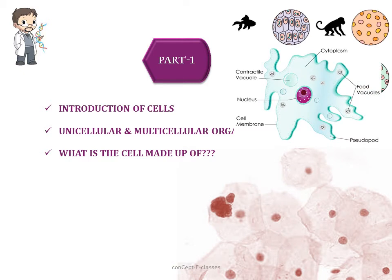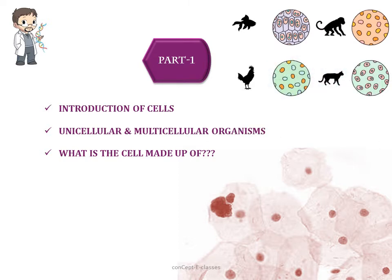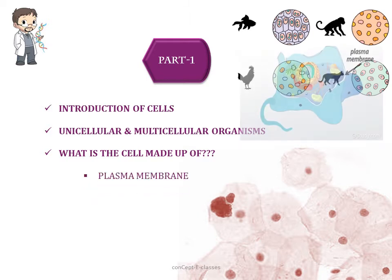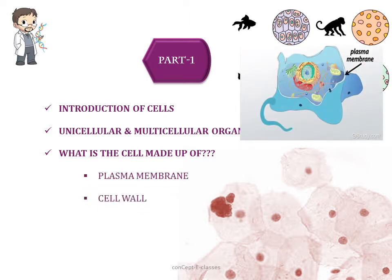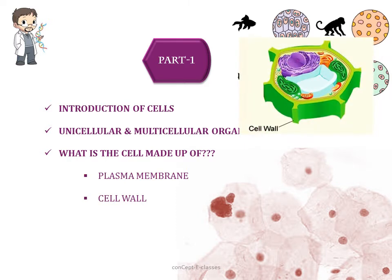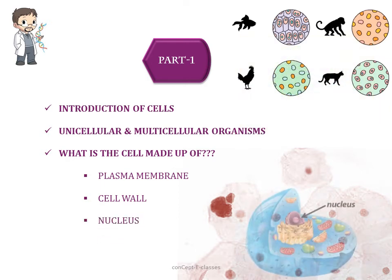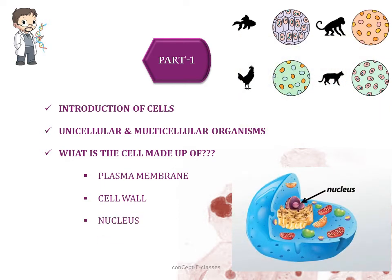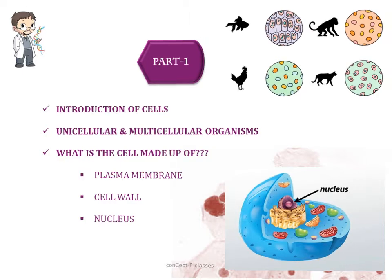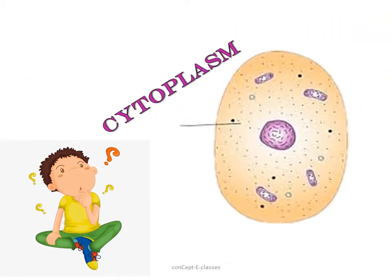We saw that in a cell there is a division of labor, and each cell has certain cell organs to perform different types of functions. We also saw the structural organization of a cell — if we observe a cell under a microscope, we come across three features in almost every cell: the plasma membrane, nucleus, and cytoplasm. In Part 1 we covered the plasma membrane, cell wall in plant cells, and the nucleus.